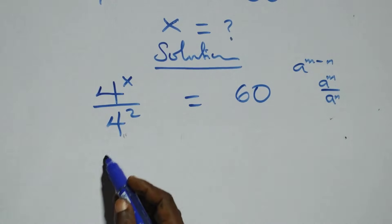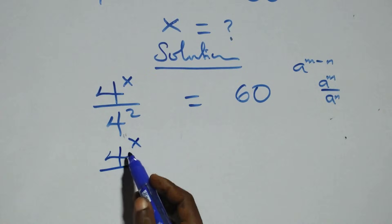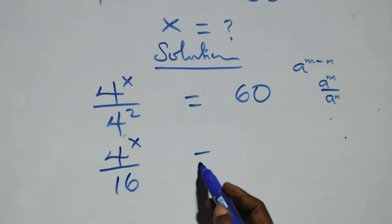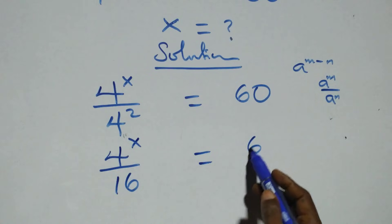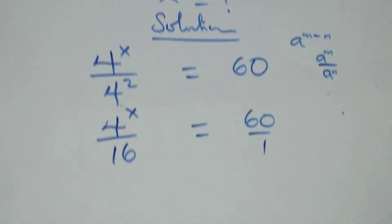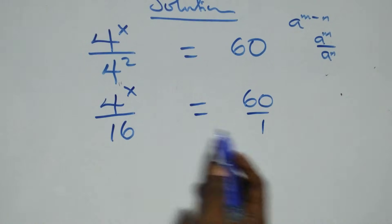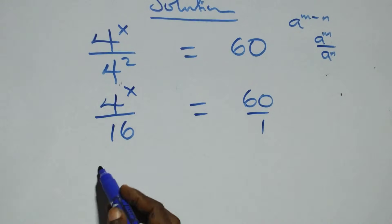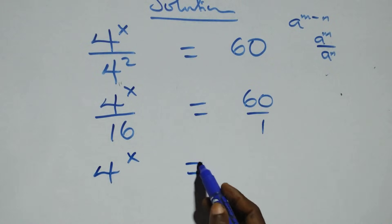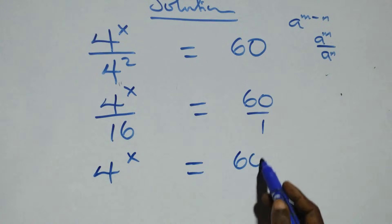That is, we can write this as 4 raised to power x over 4 squared equals 60 over 1. Then we cross multiply: 4 raised to power x times 1 is the same as 4 raised to power x equals 60 times 16.